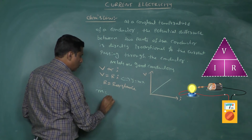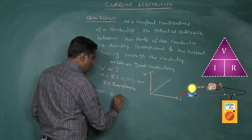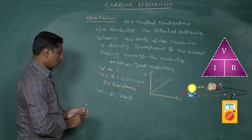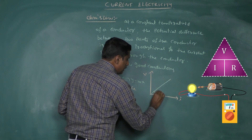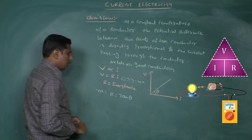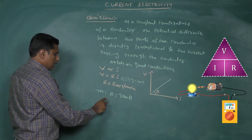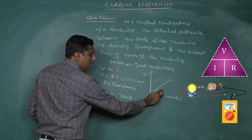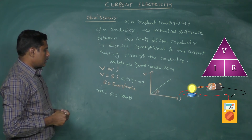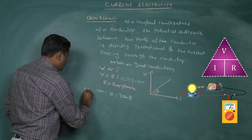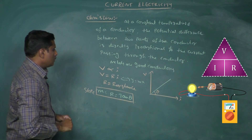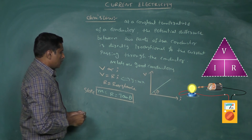Here R is the slope of this line. The slope M is equal to R, which equals tan θ, where θ is the angle made by this straight line with the current axis. So the resistance R gives the tangent of the angle made by the straight line with the current axis: R equals tan θ.